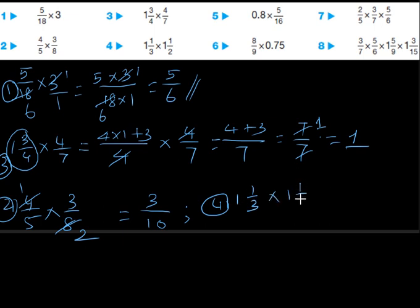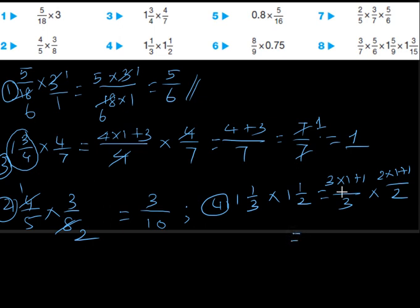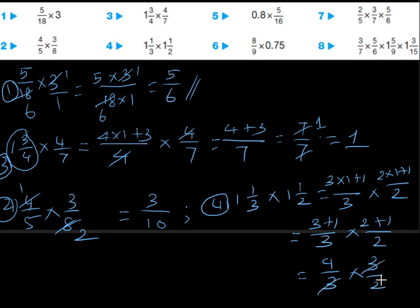The fourth question is 1⅓ × 1½. We convert both mixed fractions into improper fractions: 1⅓ becomes (3×1+1)/3 = 4/3, and 1½ becomes (2×1+1)/2 = 3/2. So it is 4/3 × 3/2. We cancel 3 with 3, and cancel 2 into 4 giving 2/1. The final answer is 2.